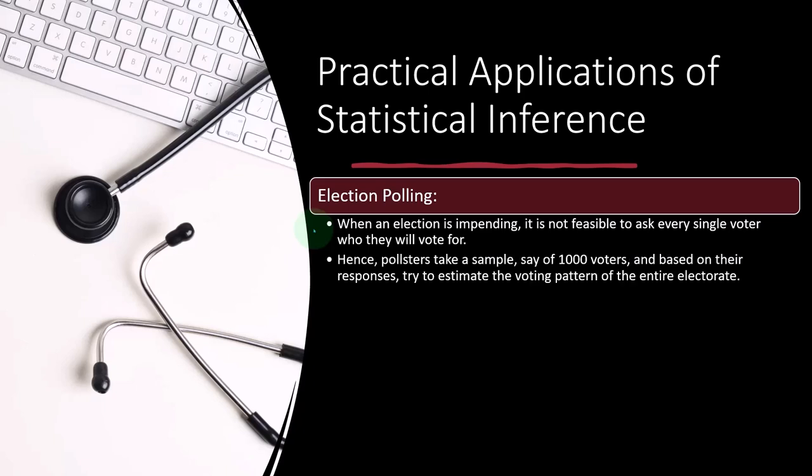So what we can possibly do is have pollsters take a sample, say 1000 voters, and based on their responses, try to estimate the voting pattern of the entire electorate. So they're going to try to get a sample and see if they can get the data on the sample and infer that results to the entire population.